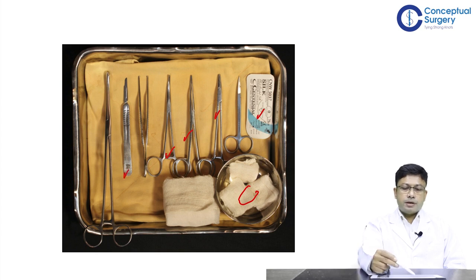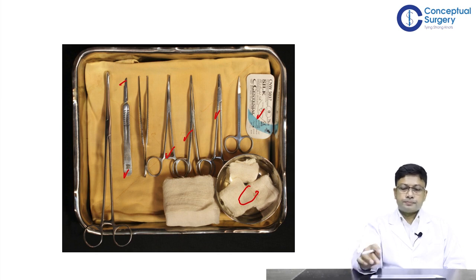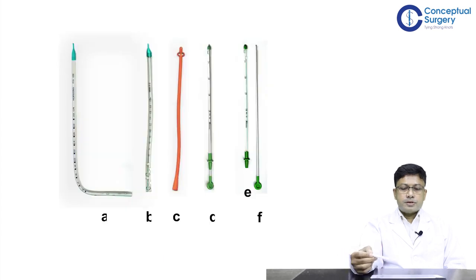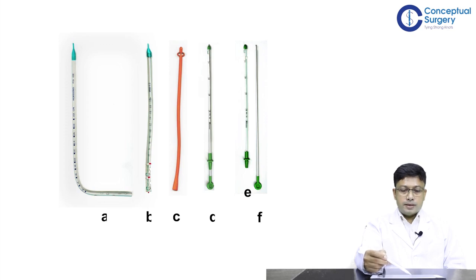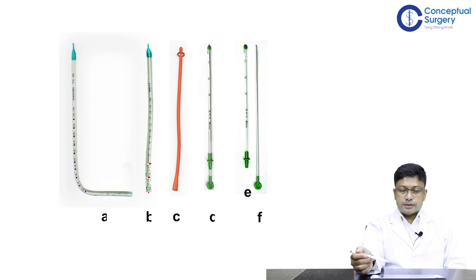A scalpel with a number 15 blade is required to make the skin insertion site. This picture shows the various chest tubes used for tube thoracostomy procedures. We have straight flexible tubes, curved flexible tubes, and tubes with a metallic trocar inside. The chest tube has a few draining holes at the tip, and on the tail end it has a tapered drain which is cut and connected into an underwater drainage collecting system.